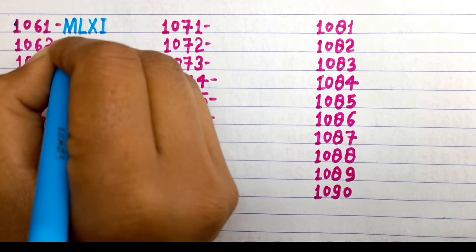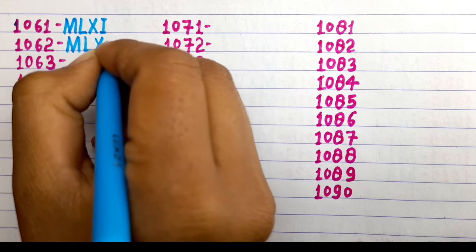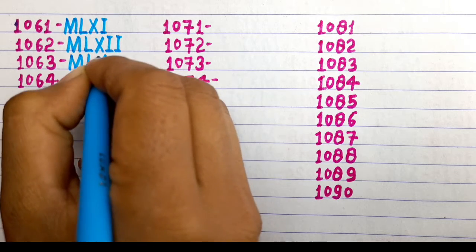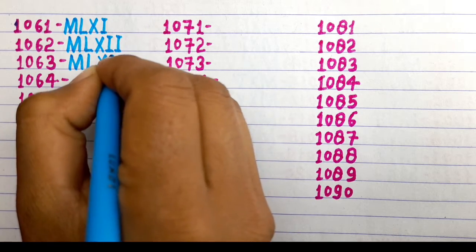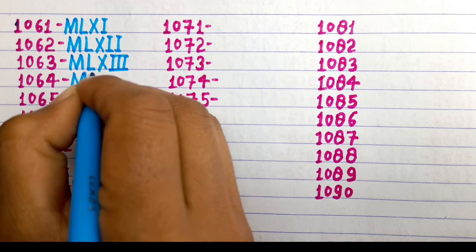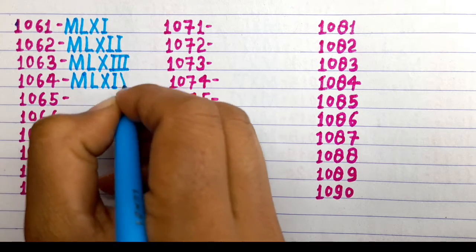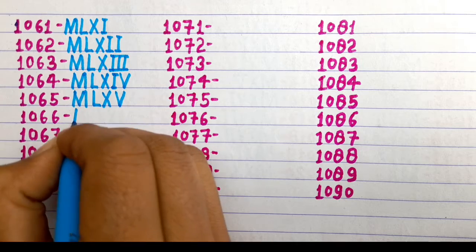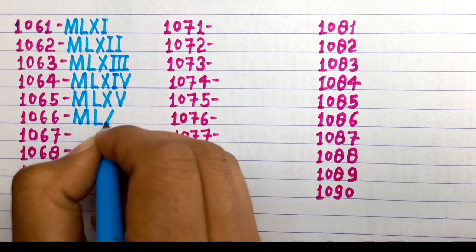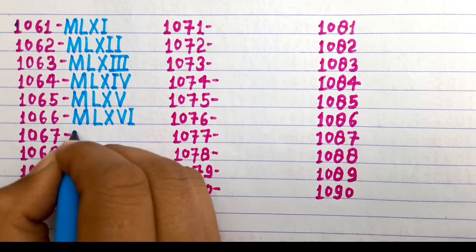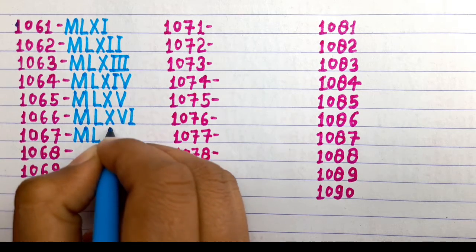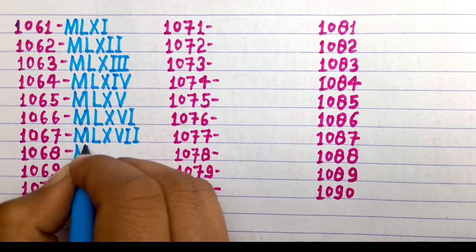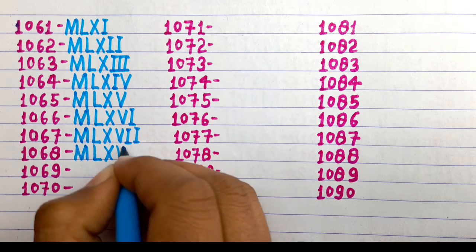1061 MLXI, 1062 MLXII, 1063 MLXIII, 1064 MLXIV, 1065 MLXV, 1066 MLXVI, 1067 MLXVII, 1068 MLXVIII.